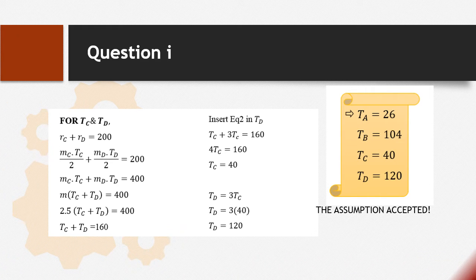For TC and TD, we use the same method. First, RC plus RD equals 200. We change R to the equation M multiplied with T over 2. We take the denominator to the right hand side, so MC multiplied with TC plus MD multiplied with TD equals 400. As we know MC equals MD, we change M to 2.5. The value of 400 will be divided by 2.5, so we get TC plus TD equals 160.